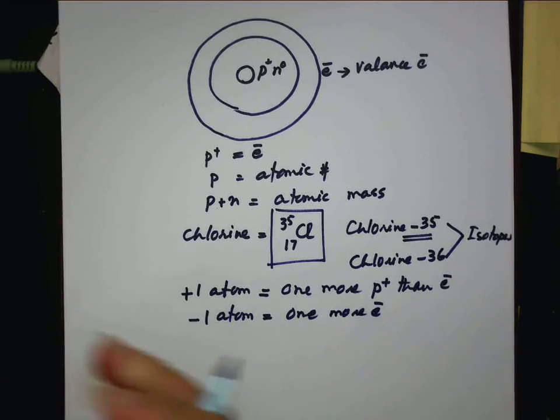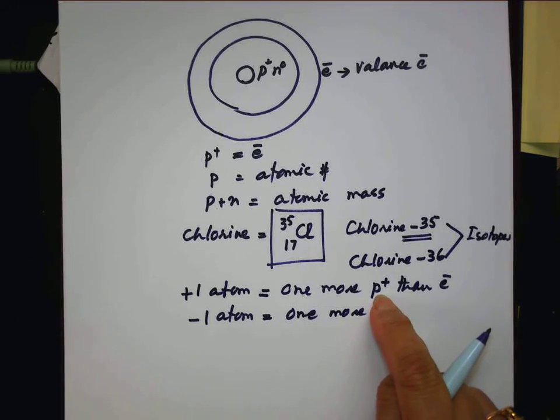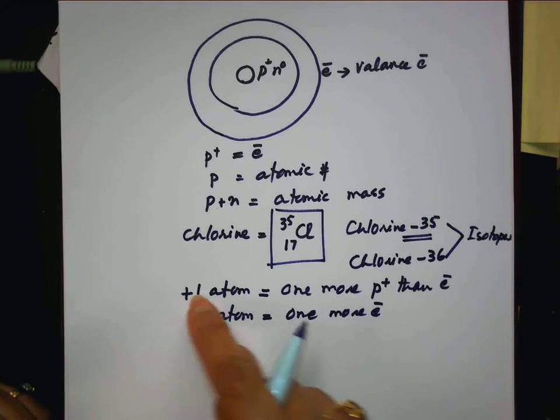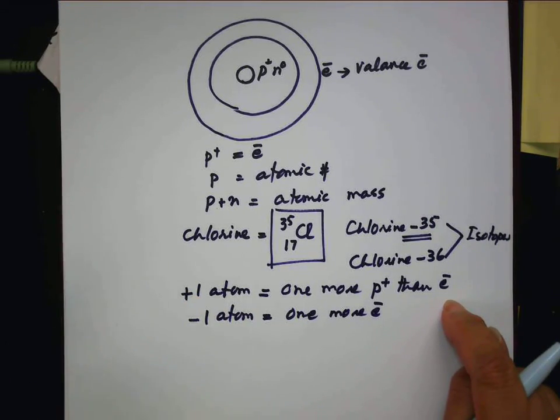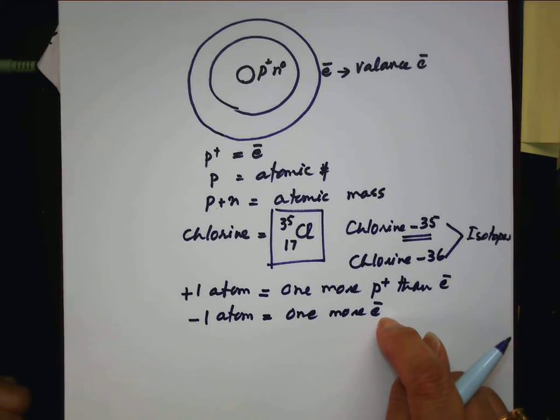So when you have to look at the positive and negative ion, cation and anion, you have to just find the protons. If it is a positive ion, the electron will be less than a proton. If it is a negative ion, the electron will be more.